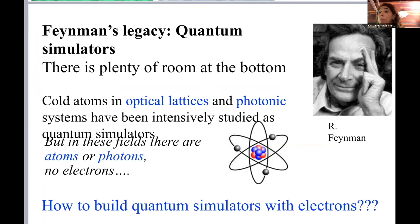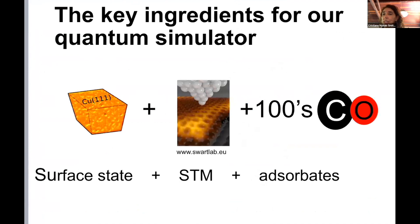The question we address is how to build quantum simulators with electrons and topological states of matter. We use four ingredients for our quantum simulator. The first is a metal like copper, because above a certain energy the electrons on the surface form an electron liquid. Then we use a scanning tunneling microscope to pattern atoms on top to generate the lattices we are interested in. The adsorbates are carbon monoxide molecules, hundreds of them, patterned with the tip of the microscope to build various kinds of lattices.